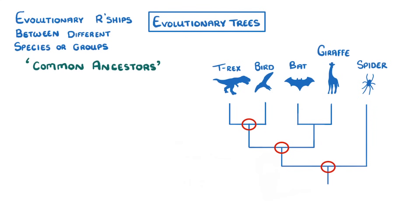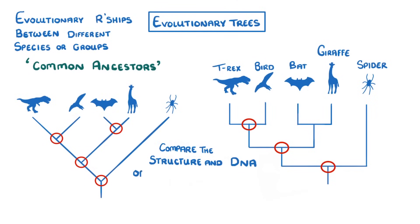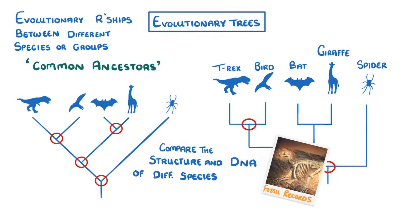Different evolutionary trees can look quite different — this here is the same information, just in a different form. The main thing to remember is that whenever a line splits in two, it's because a common ancestor is splitting into two different species. In order to learn all of these relationships in the first place, scientists had to compare the structure and DNA of different species, looking not only at living species around today, but also at the fossil records.